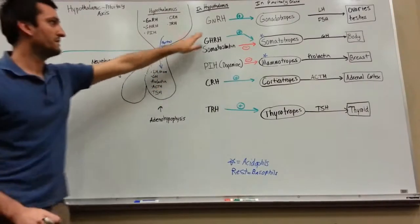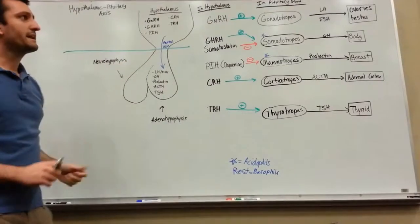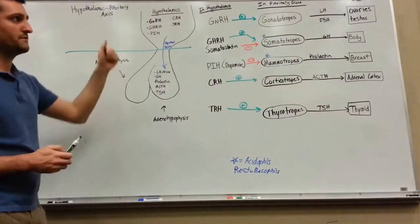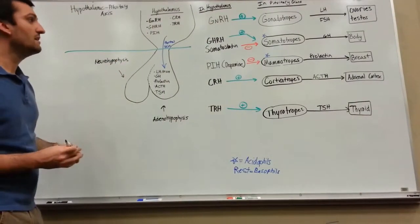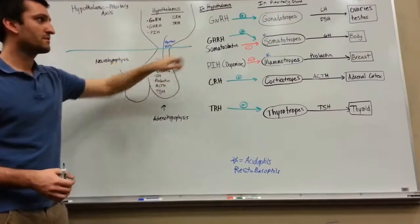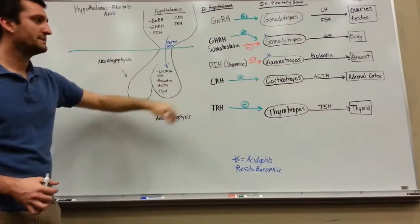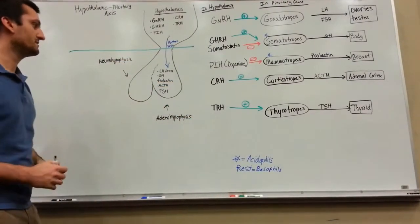What that's going to do is prevent all these releasing hormones from affecting the different cell types. Gonadotropin-releasing hormone cannot stimulate those gonadotropes, so you're going to have a drop in LH/FSH. Likewise, you're going to drop your growth hormone, your ACTH, and your TSH.